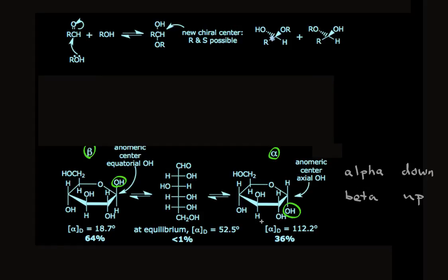In any case, these Haworth drawings make it very easy to see, as long as we put the oxygen in the upper right corner of this ring. And we have the hydroxymethylene sticking up. Beta is up, and alpha is down.